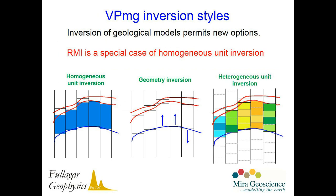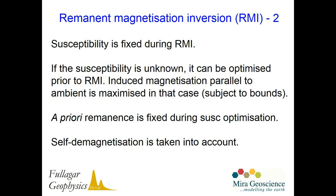There are three different styles of inversion available within the VPMG framework, and the one we're using here is homogeneous unit inversion. We're looking for the optimal properties within given units that have geological meaning, and we're particularly optimising first the susceptibility and then the remnant magnetisation within given geological units. During the remnant inversion, we keep the susceptibility fixed, and we can also optimise susceptibility as a starting point or impose an a priori starting remnant if we wish. Finally, we can take self-demagnetisation into account if we're dealing with a highly magnetic situation.